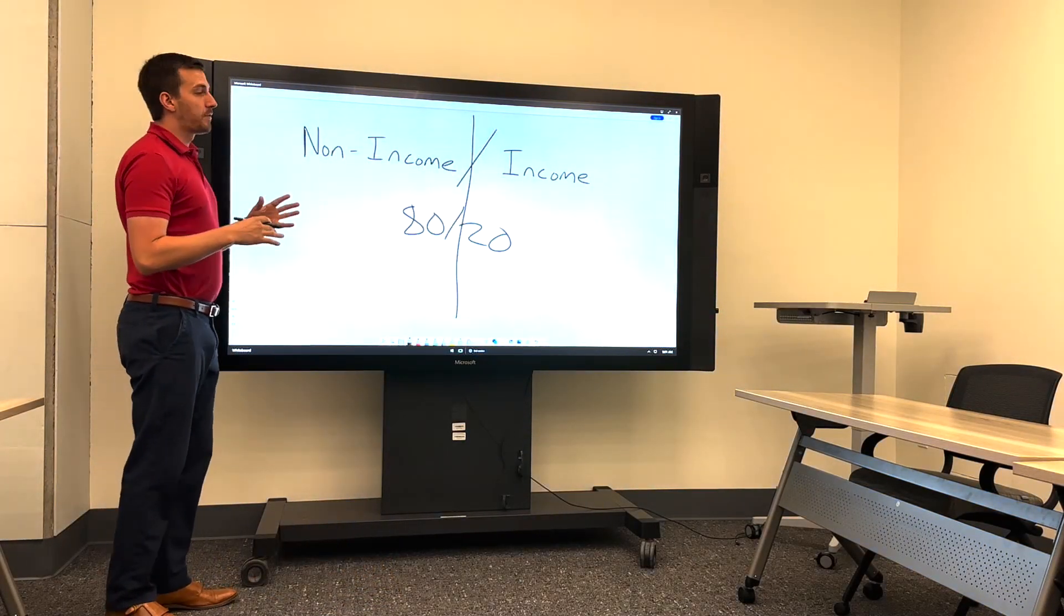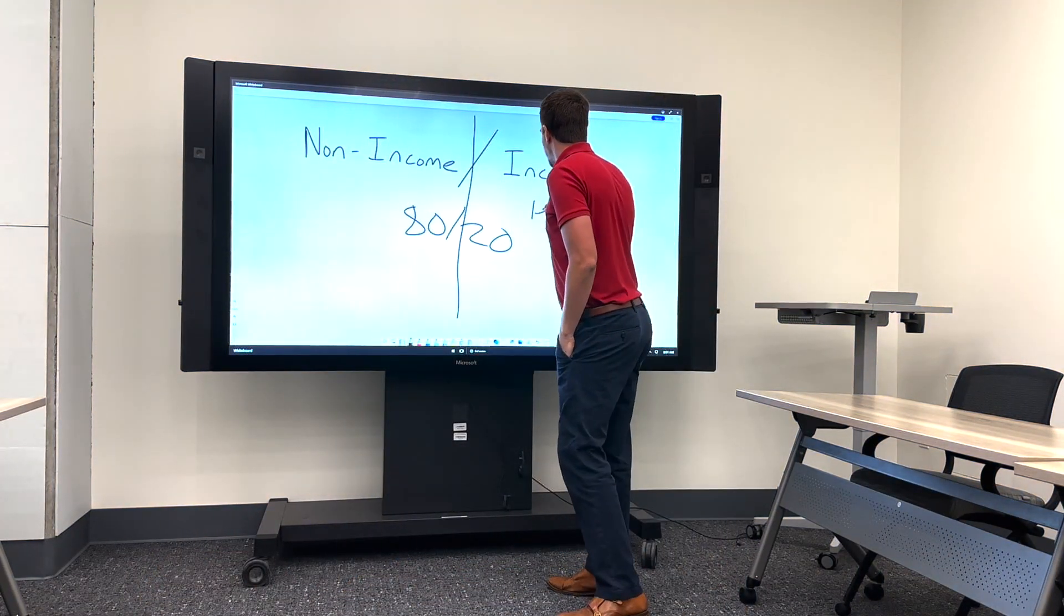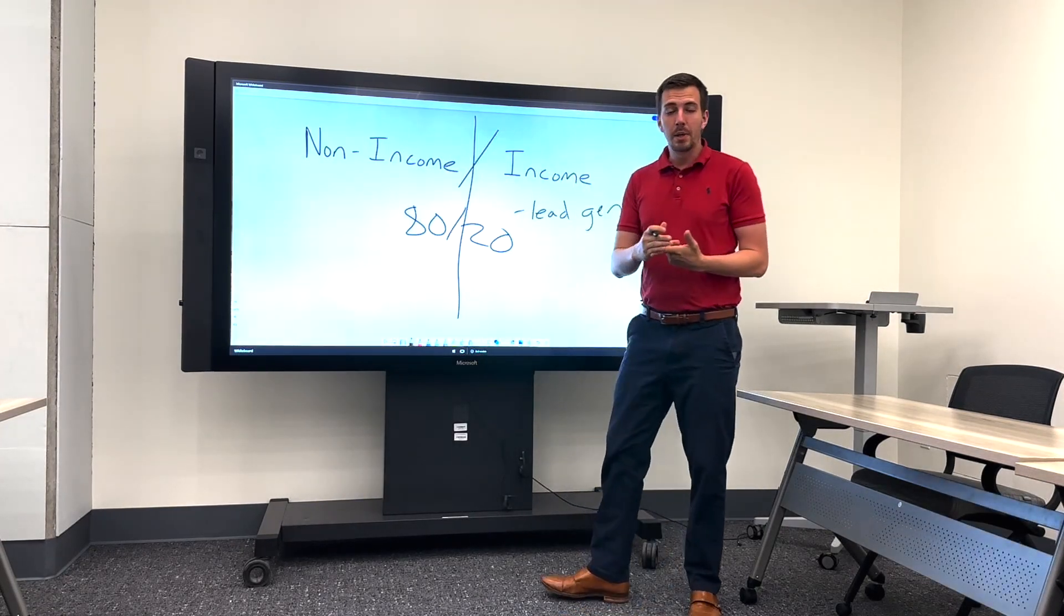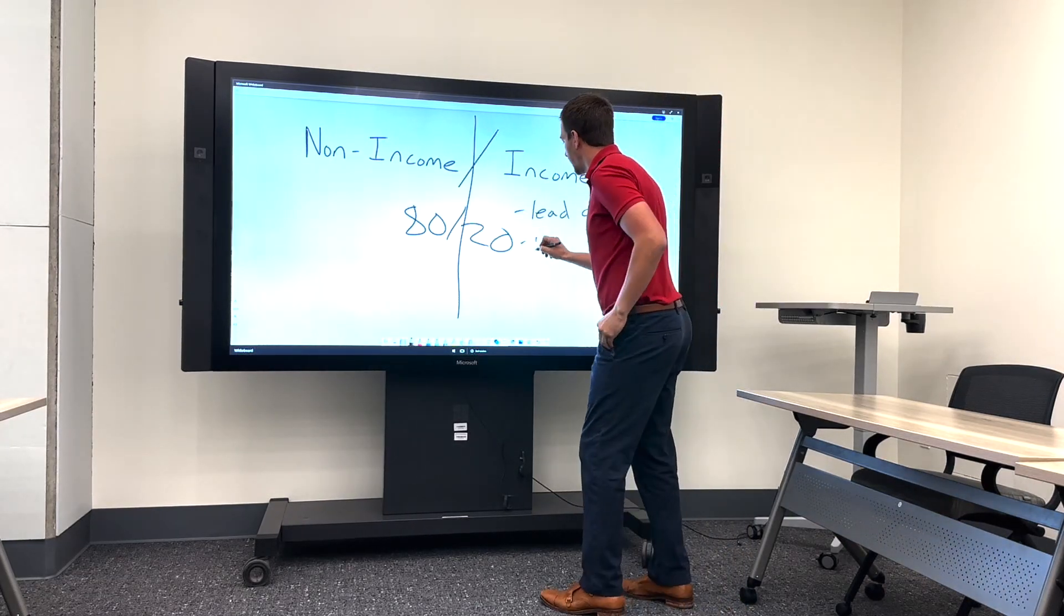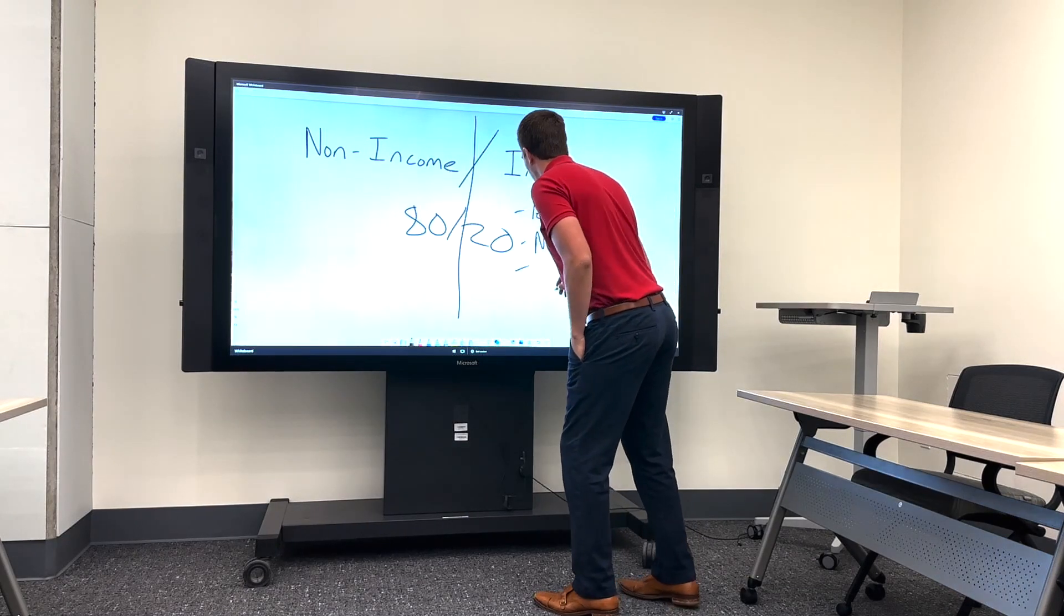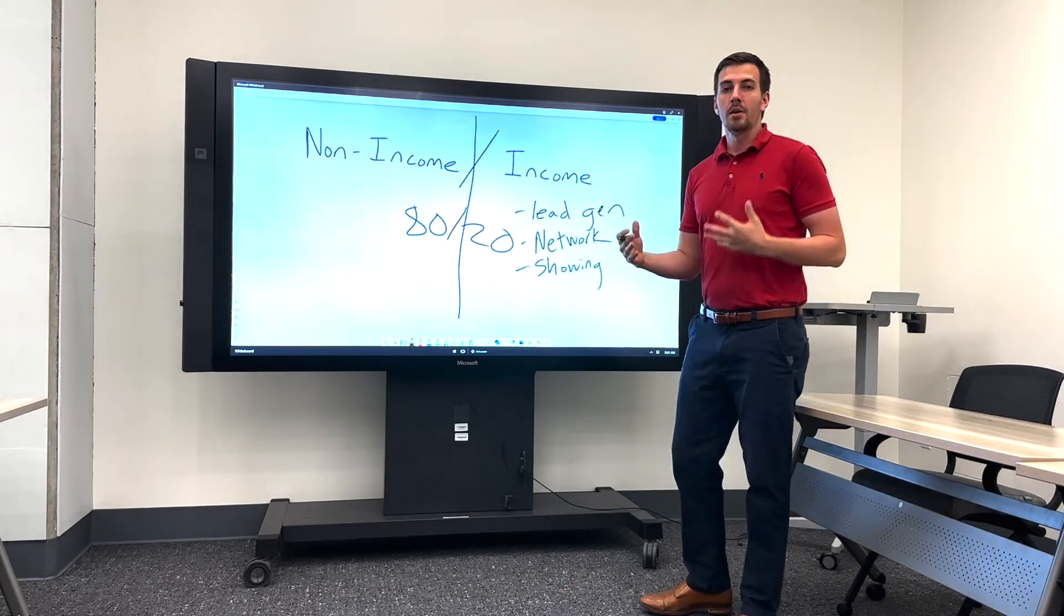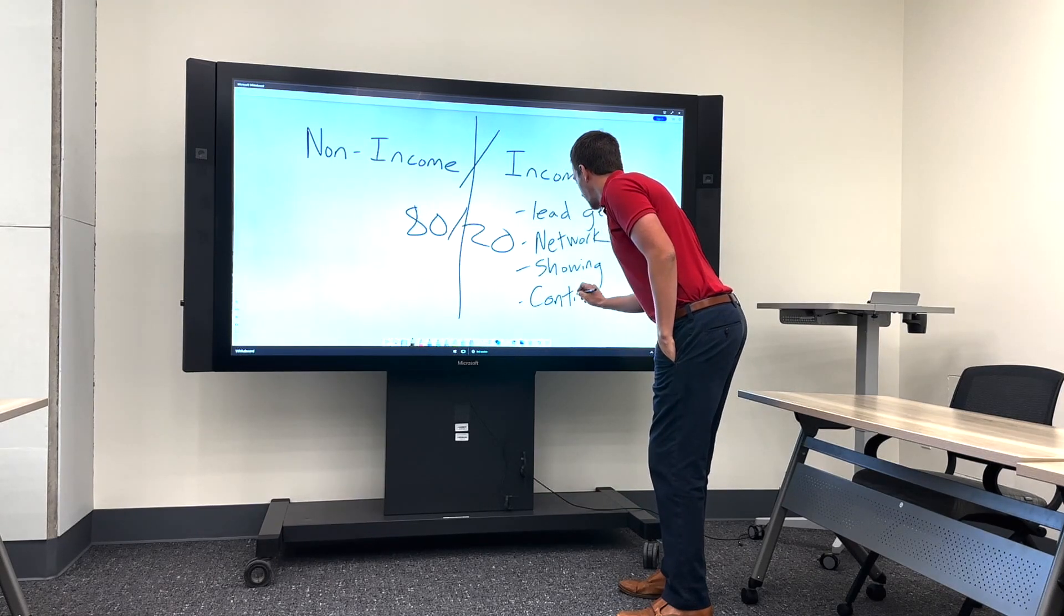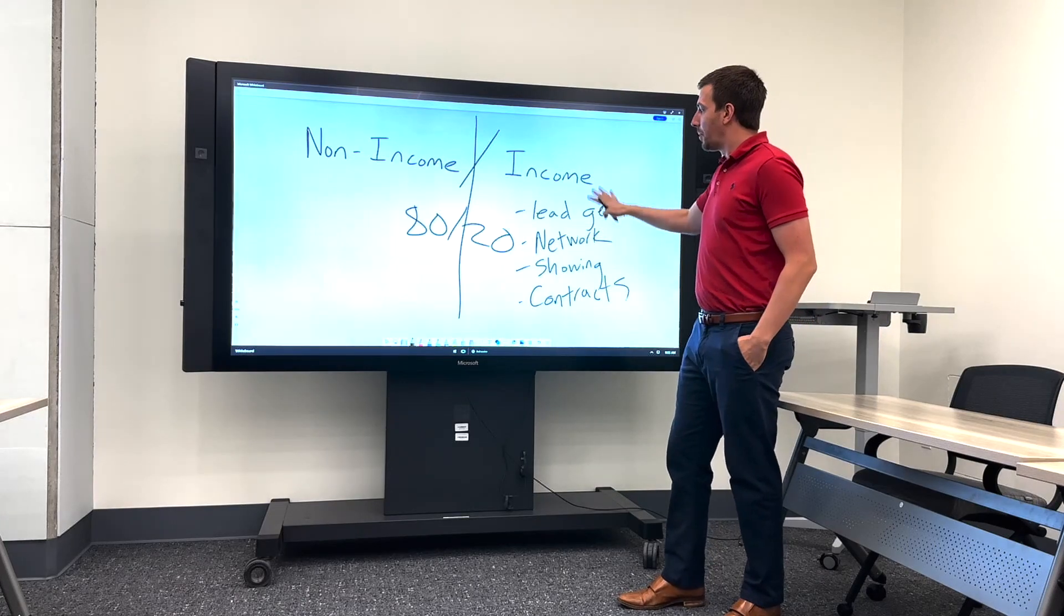And so what do different income-producing activities look like? Well, the most important, and we always talk about this, is lead generating. So that's calling people in your sphere of influence, calling for sale by owners, calling expires, networking. That's another big one. We want to network with people. Also going on showings, because showings, at least if we're showing people homes, we might have an opportunity to write a contract. All these things are income-producing activities.